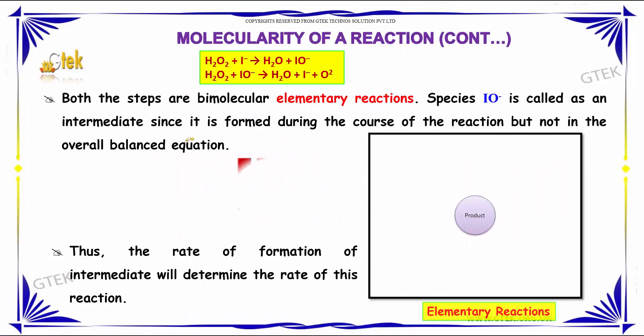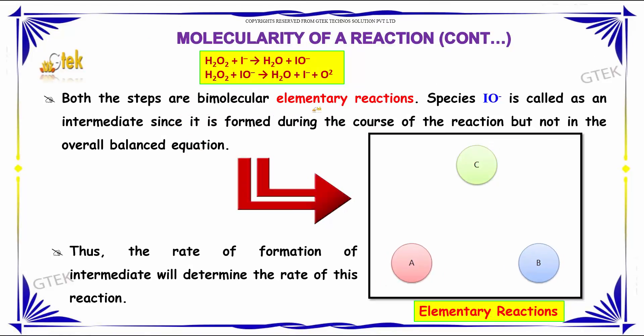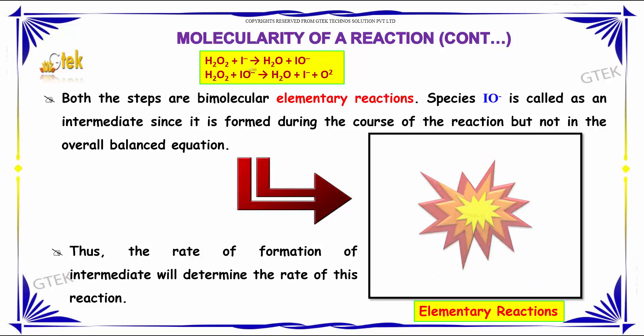Both the steps are bimolecular elementary reactions. Species IO- is considered as an intermediate since it is formed during the course of the reaction, but not in the overall balanced reaction. Thus, the rate of formation of intermediate will determine the rate of the reaction. Everything depends on the intermediate product.